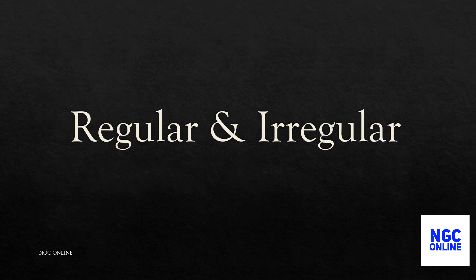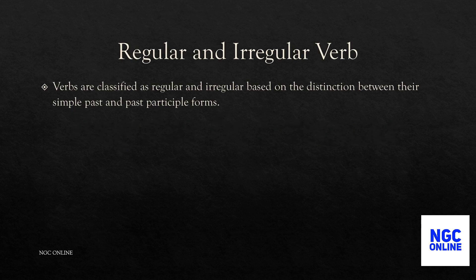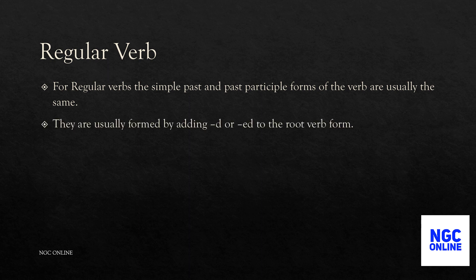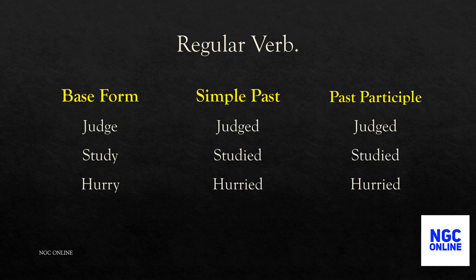Verbs are classified as regular and irregular based on the distinction between their simple past and past participle forms. For regular verbs, the simple past and past participle forms are usually the same, formed by adding 'd' or 'ed' to the root verb form. For example, 'judge' is the base form; the simple past form is 'judged' and the past participle form is also 'judged.'